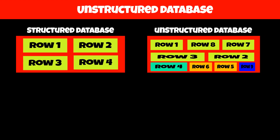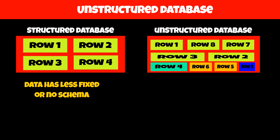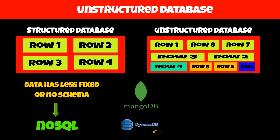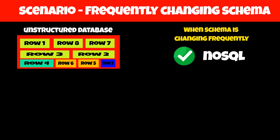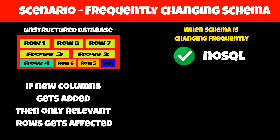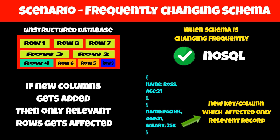Another way to store data is in unstructured format. This type of database, which stores data in unstructured format — meaning data has little or no fixed schema — is called a NoSQL database. It is a collection of all database types except SQL. NoSQL databases usually store records in key-value format. Since NoSQL databases have less fixed or no schema, they are perfect for use cases where the schema changes frequently — meaning if we add new columns to semi-structured data or new keys to key-value pairs, we don't have to update all the records in the database.